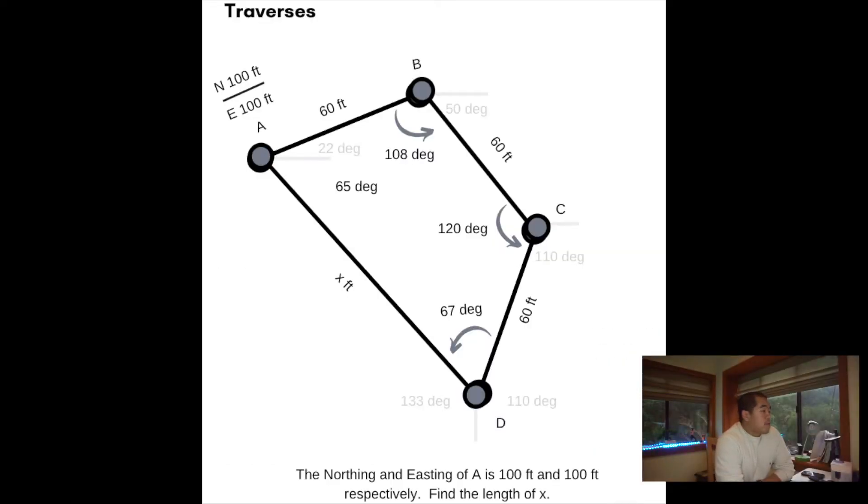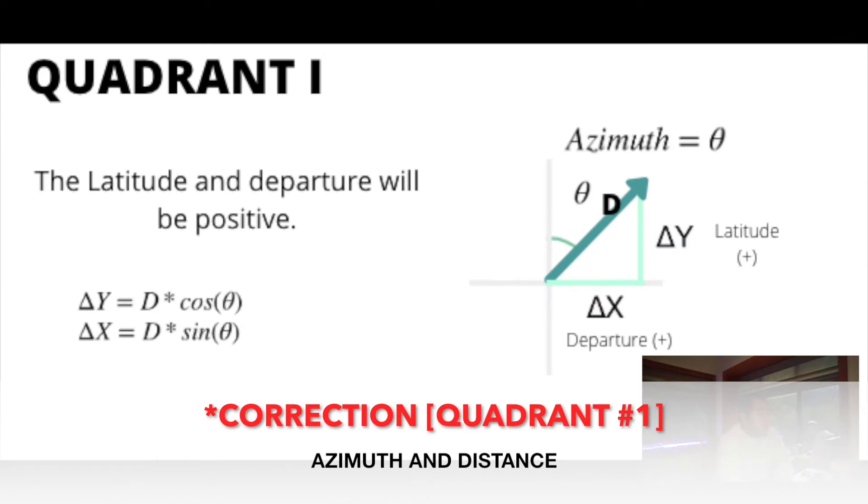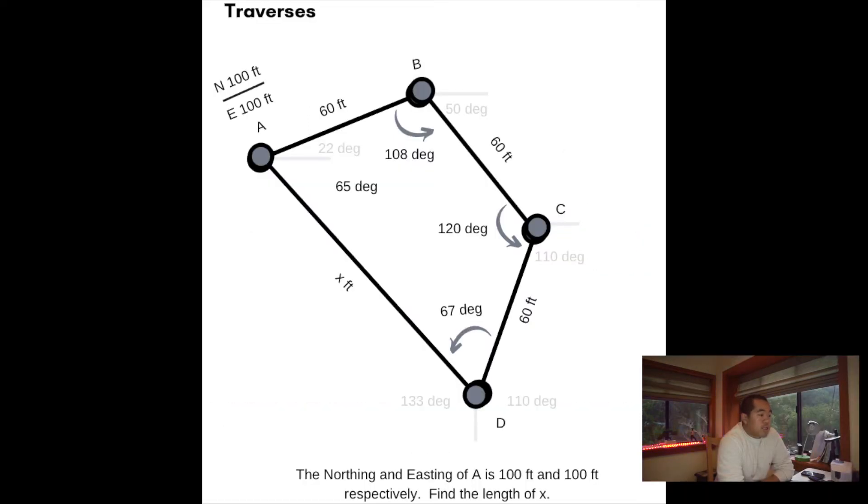Let's look at this traverse problem. We start at point A and the northing is 100 feet, the easting is 100 feet, so that's kind of the starting point of this traverse. Also for traverses you want to keep in mind that all of the points A, B, C, and D should be in quadrant number two. This is because you want everything in the same quadrant so that when you go to do your distance equations, the signs don't get screwed up or the azimuth angles don't get screwed up.